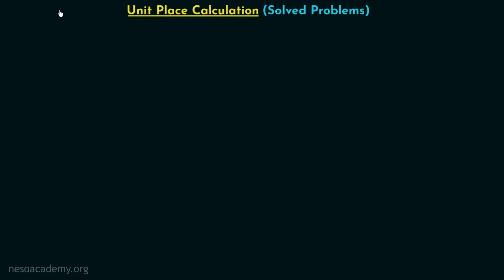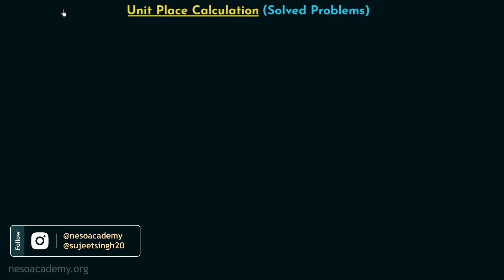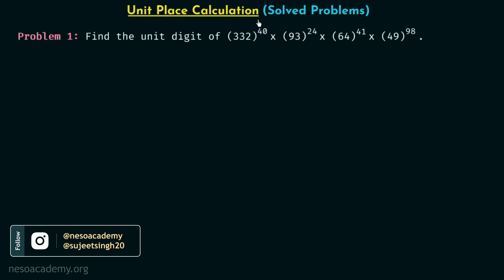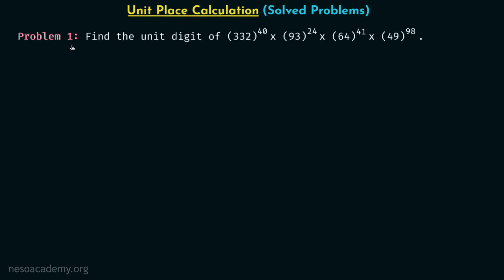In the last three lectures we have seen how to find the digit at the unit place with the help of the cyclicities of decimal digits. Now in this lecture we are going to solve two problems based on unit place calculation. In problem number one, we are required to find the unit digit of 332 raised to power 40, multiplied by 93 raised to power 24, multiplied by 64 raised to power 41, multiplied by 49 raised to power 98.